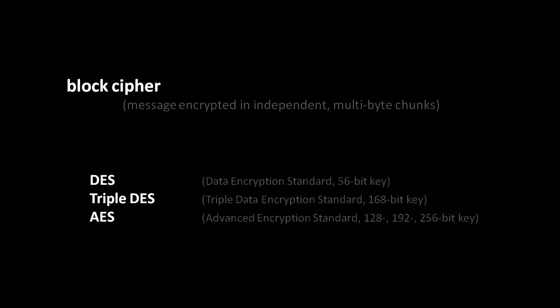Probably the three most widely used block ciphers are the three standards. First, the old DES, meaning Data Encryption Standard, which used 56-bit keys. Then the update of that, Triple DES, which, as the name implies, uses triple-sized keys — 168-bit keys. And then there's AES, which was introduced in the last decade and uses 128, 192, or 256-bit keys.